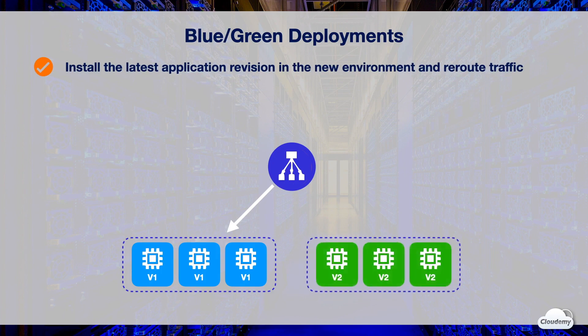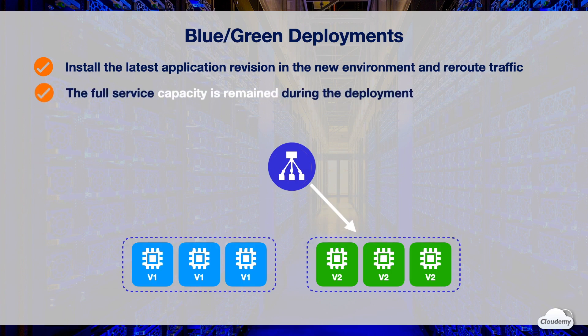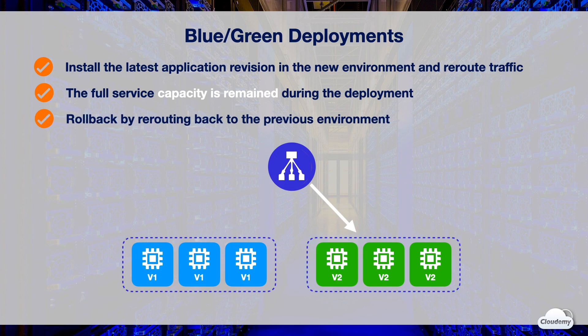When you use blue-green deployments, you can install the latest application revision in the replacement environment. After the installation, you can validate and test the new environment. If all tests have passed, you can deploy the application to production by rerouting the traffic to the new environment. For EC2 deployments, you can use a load balancer to shift traffic from old instances to the new instances. For Lambda deployments, traffic is shifted from the old version of the Lambda function to the new version specified in the app spec file. For ECS deployments, the application is deployed to a new ECS task set, and CodeDeploy reroutes production traffic from the old task set to the new task set. During the blue-green deployment, both old and new environments are running and the full service capacity is maintained. Because there are two environments running during the deployment, you need to pay for both environments. To roll back blue-green deployments, you can simply reroute the traffic back to the previous environment.